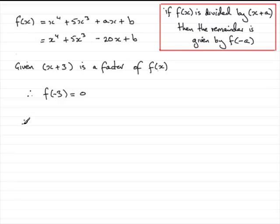So if we do that, we've got minus 3 to the power 4 plus 5 times minus 3 all cubed minus 20 times minus 3 plus b equals 0.